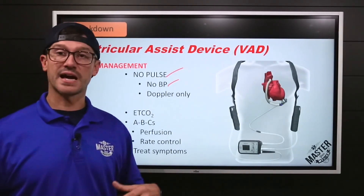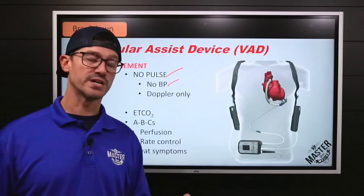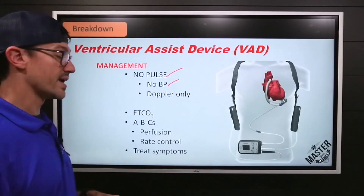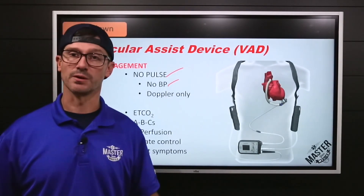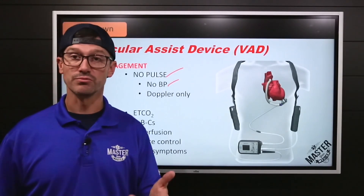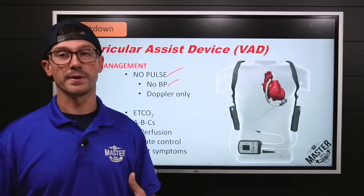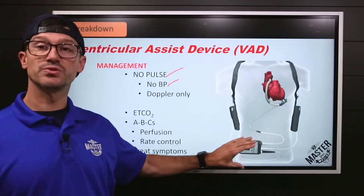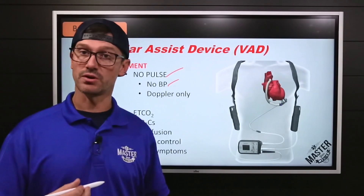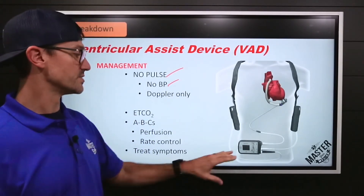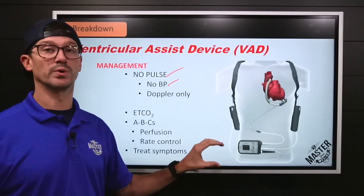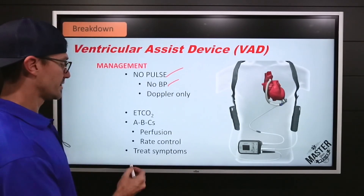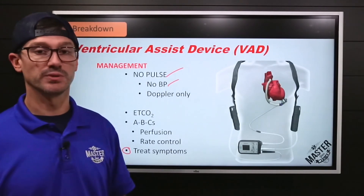Capnography is reliable: end-tidal CO2 will still tell us the overall perfusion status within the body. We still rely on ABCs — airway, breathing, circulation. While we can't sense a pulse, skin tone, temperature, and condition are all still reliable patient indicators. When it comes to rate control, the VAD is doing its own thing. Regardless of the electrical activity in the heart, it is 100% reliant on the controller and what it has been calibrated to by the VAD center. So the key is treating symptoms that we see in these patients.